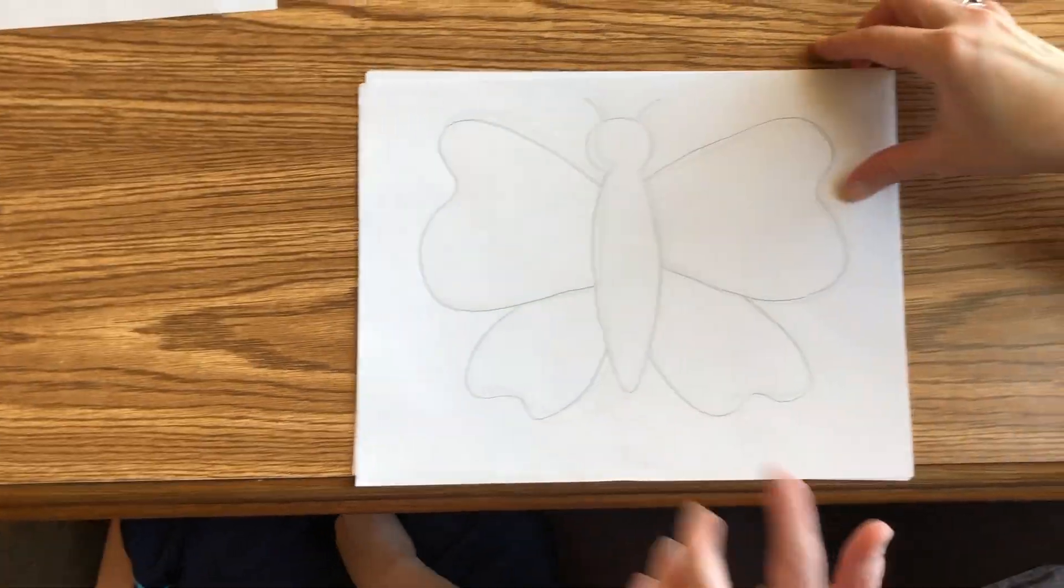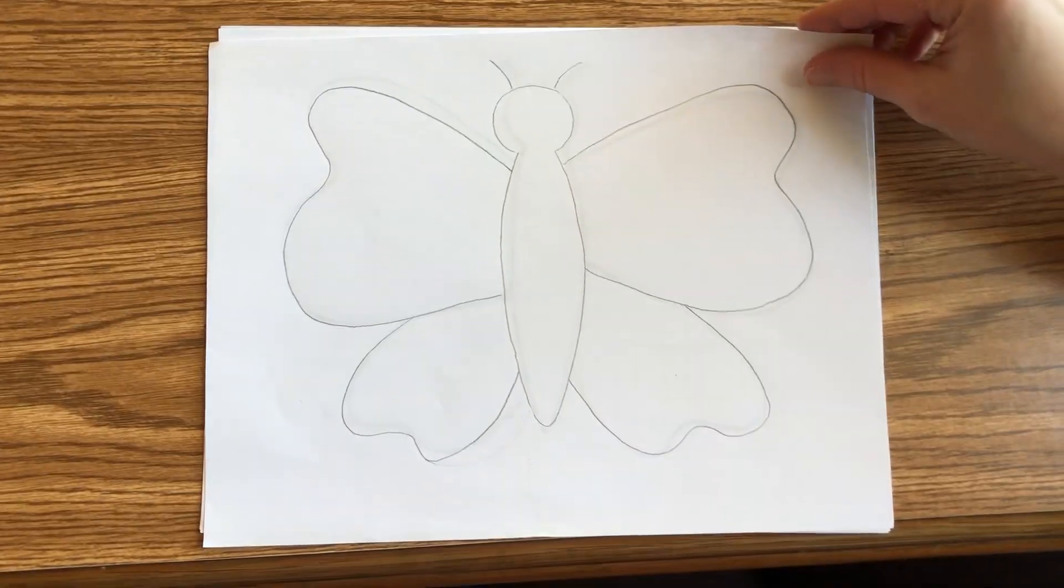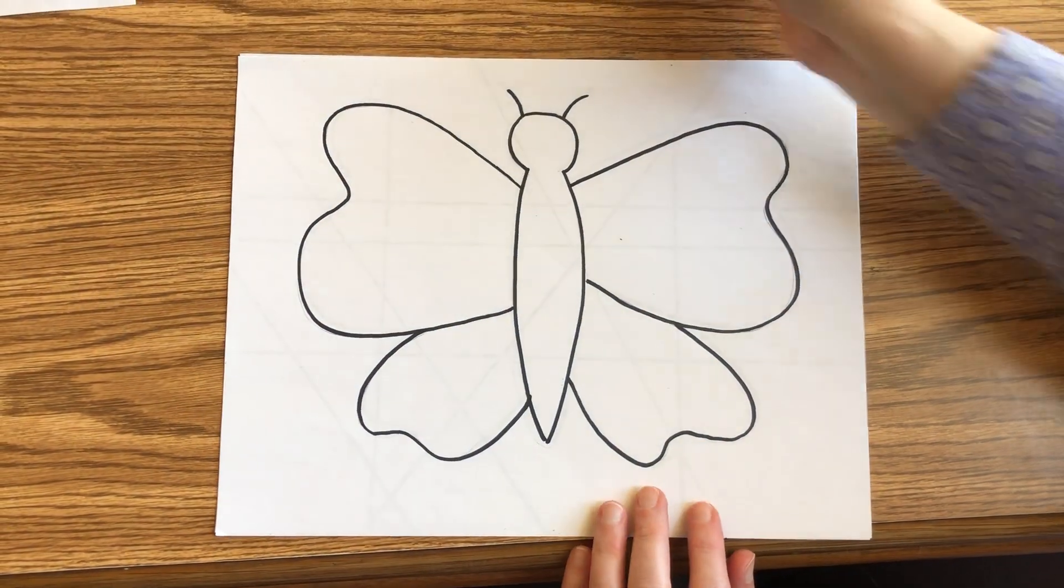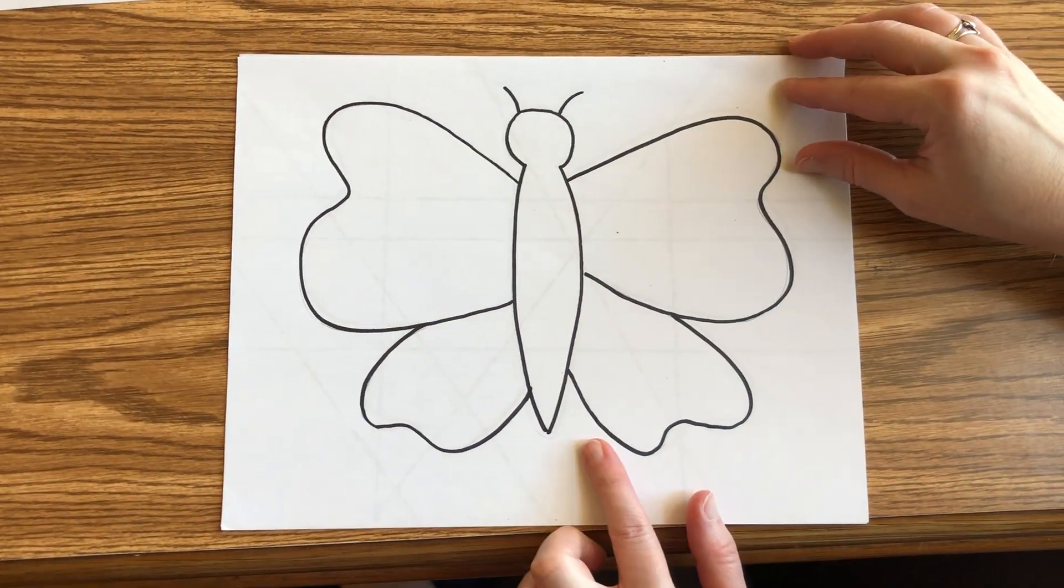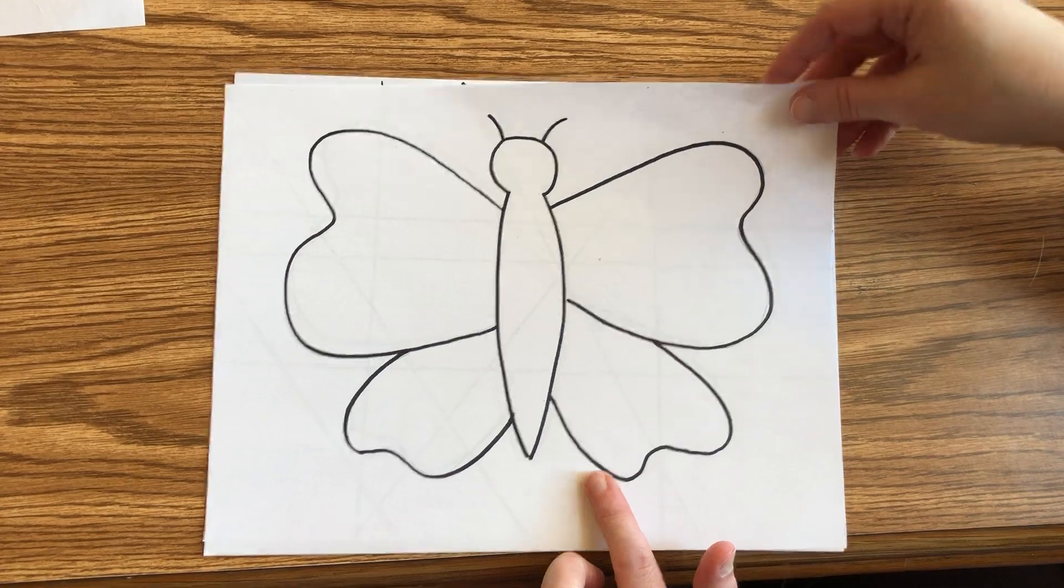So you start, step one, draw whatever it is you're going to draw. So I drew a butterfly real quickly. Then step two, outline it with black marker or black crayon.